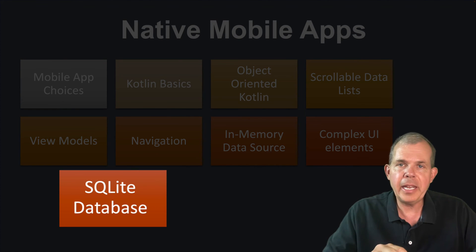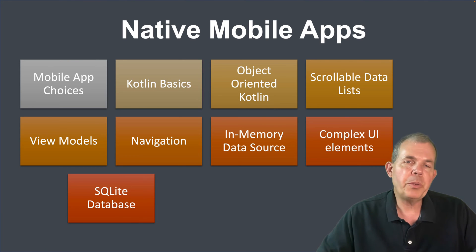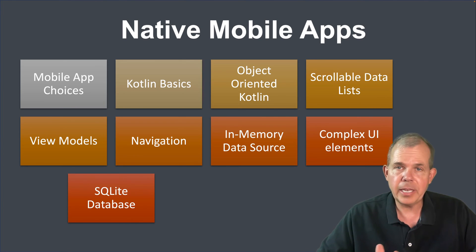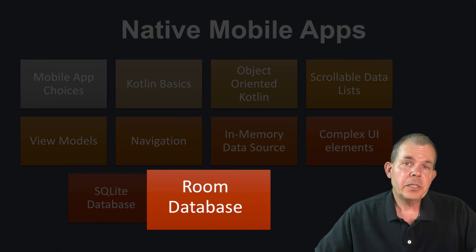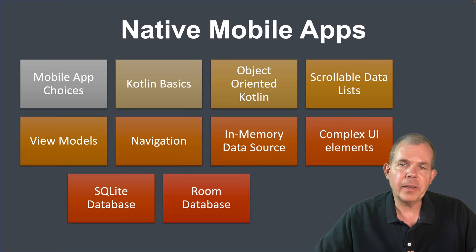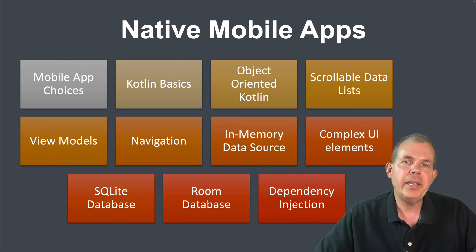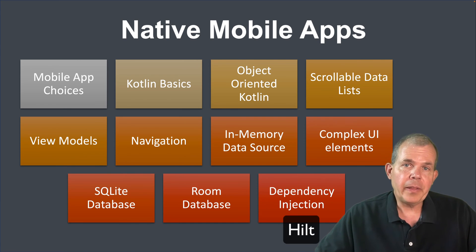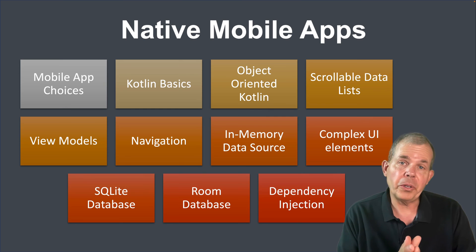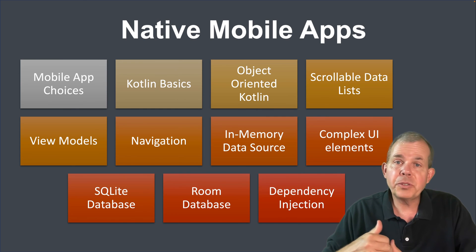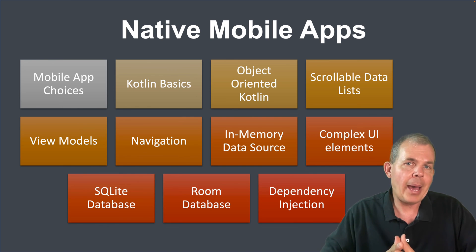Then we're going to do some data storage. Built into your phone is a database called SQLite, and it's like any other SQL database — you can save things to tables and run queries to fetch your data. We'll save our list of data on the phone so you can use it between sessions. Then we're going to introduce a concept called Room, which automatically manages your tables and database — it's a library function that is certainly a common practice. And finally we'll do something called dependency injection using a library called Hilt.